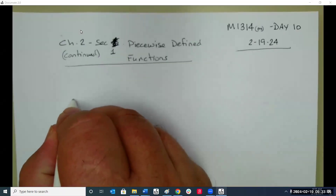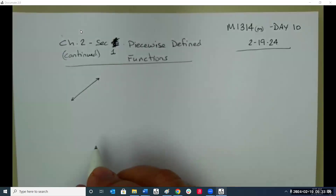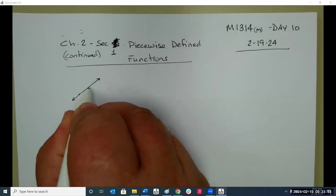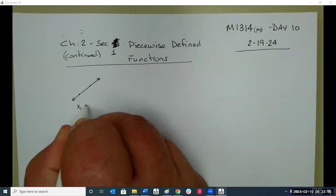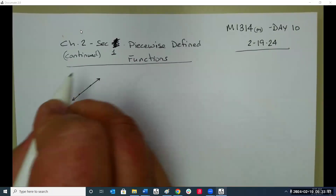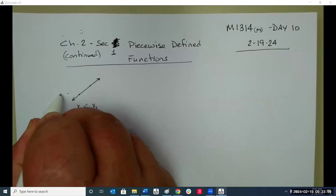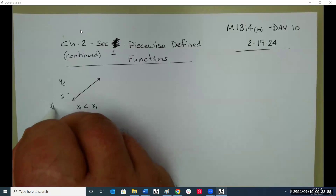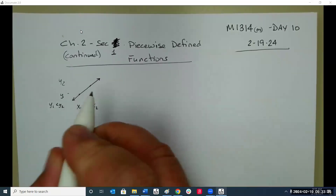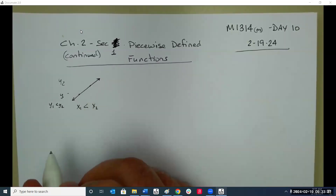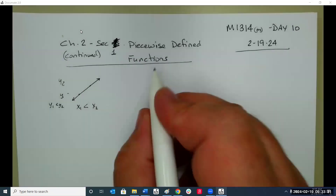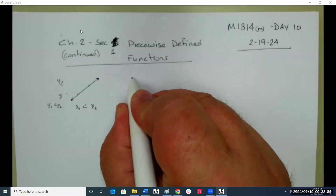An increasing function: if x1 is less than x2, then y1 is less than y2. That's an increasing function — in other words, as we go further to the right, it goes higher.